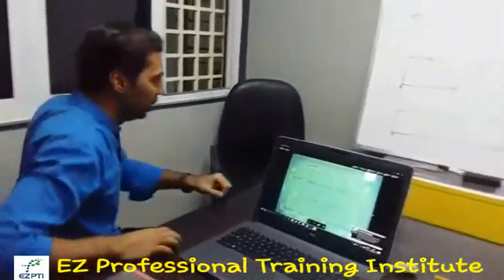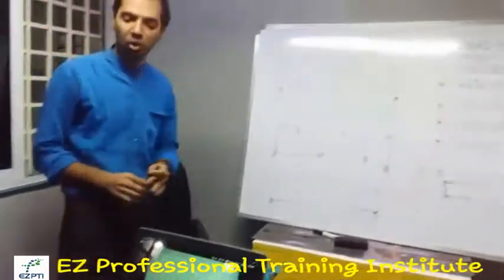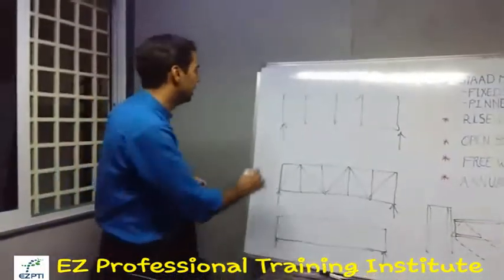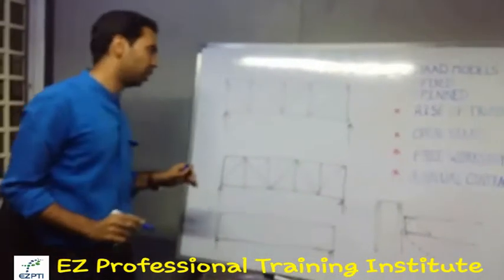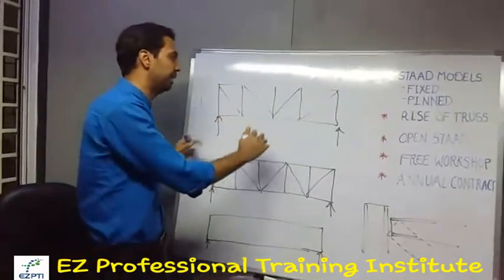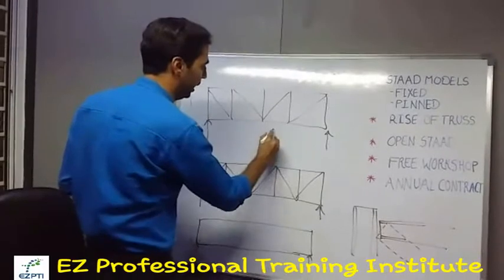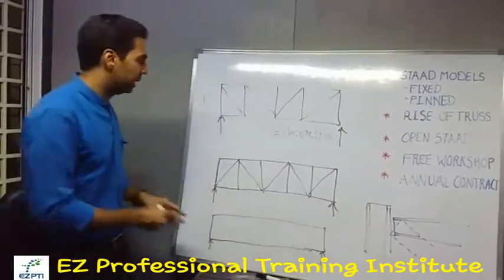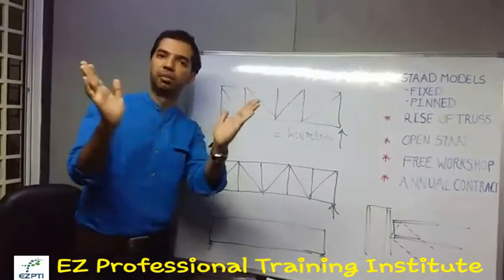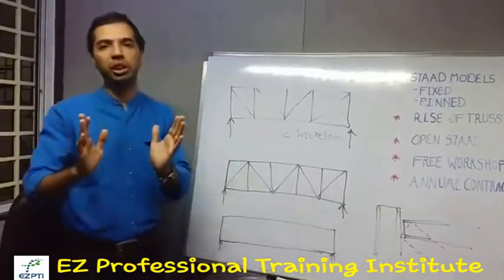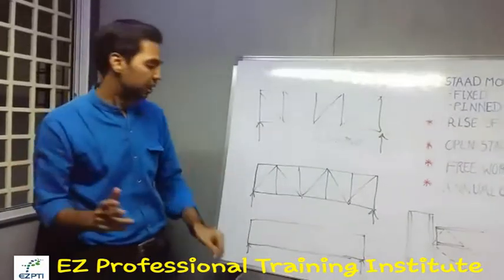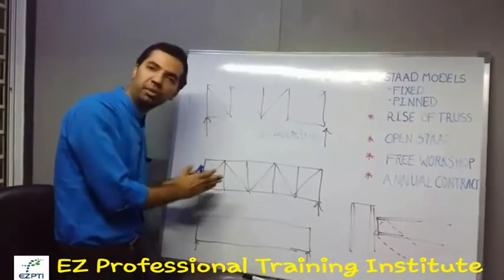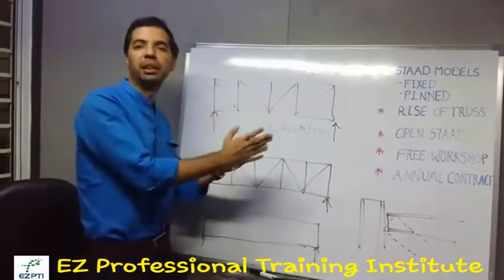First of all let us see the bracing direction, how it matters in the force transfer mechanism. This is one concept of bracing, generally used in elevation bracing. This pattern produces tension in all the bracing, while this type of bracing produces one bracing in tension and one bracing in compression.